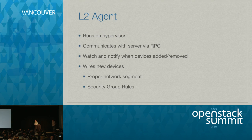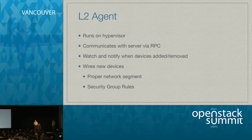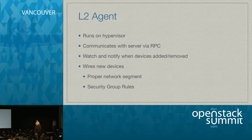The L2 agent actually runs on the hypervisor and communicates back to Neutron via an RPC layer. The L2 agent's main job is to watch and notify when devices are added and removed, and to configure the networking on the host for that device — whether that's Linux Bridge using brctl commands, or OVS using OVS-vsctl and similar tools. This also handles security group rules for those hosts.